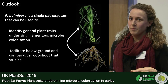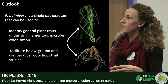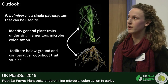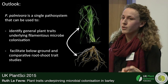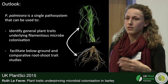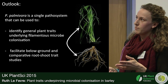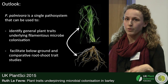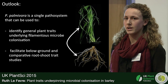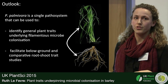Overall, we think we've found a pathogen we can use to identify plant traits that will control filamentous microbial colonisation. It's a single pathosystem, which negates the need for different pathogens and different tissues. Because Phytophthora palmivora can infect both shoots and roots, we hope it will facilitate not only below-ground studies, which have been lacking, but also comparative root-shoot studies.